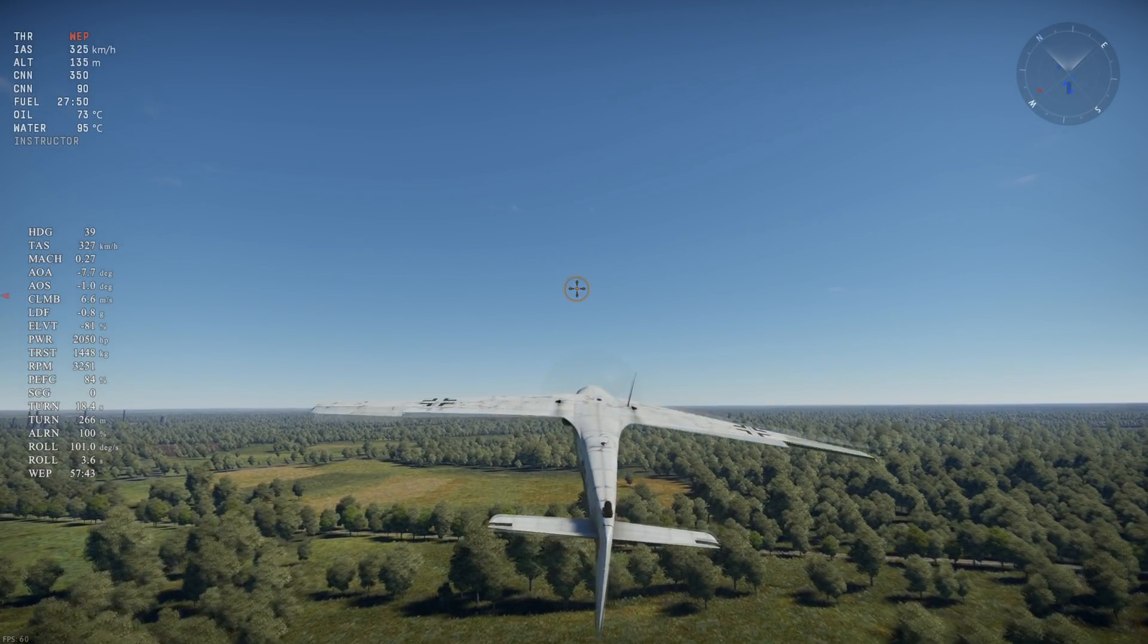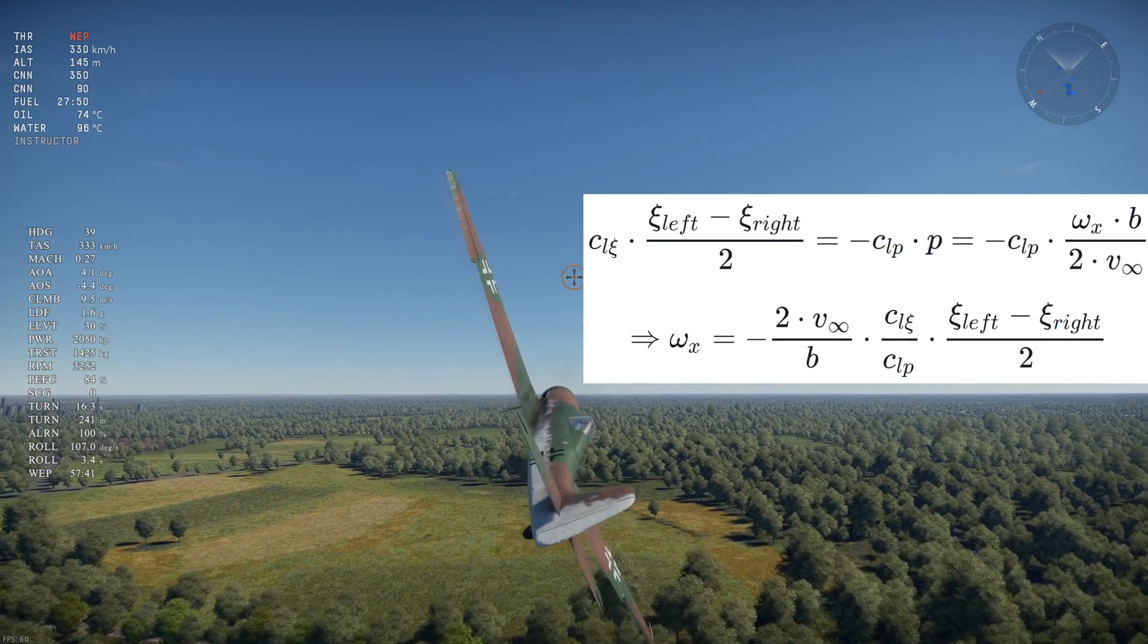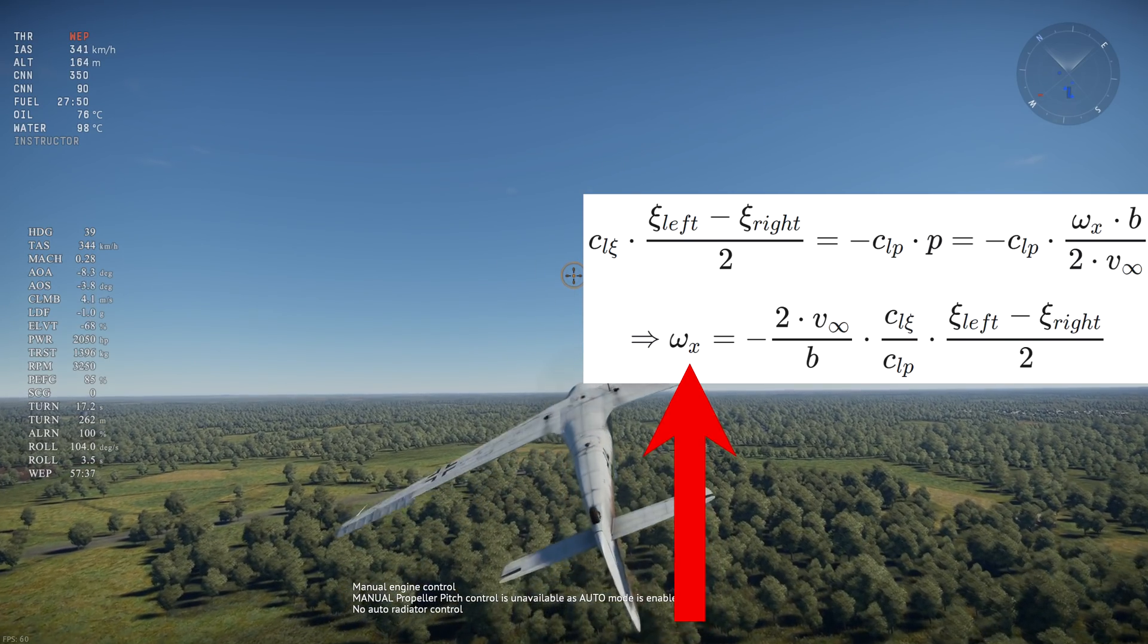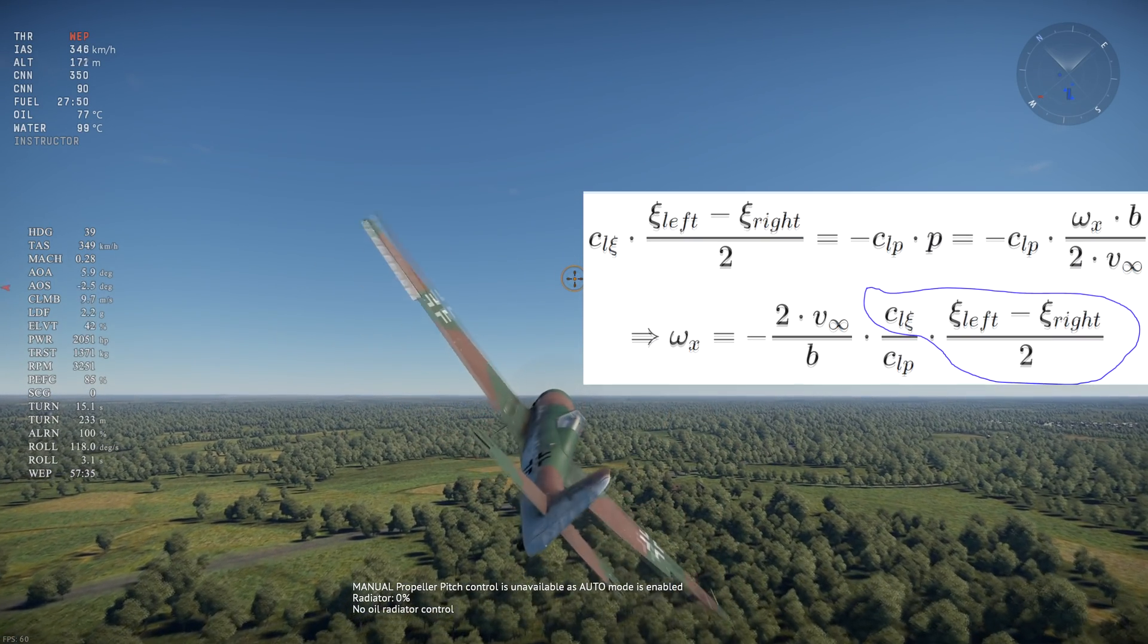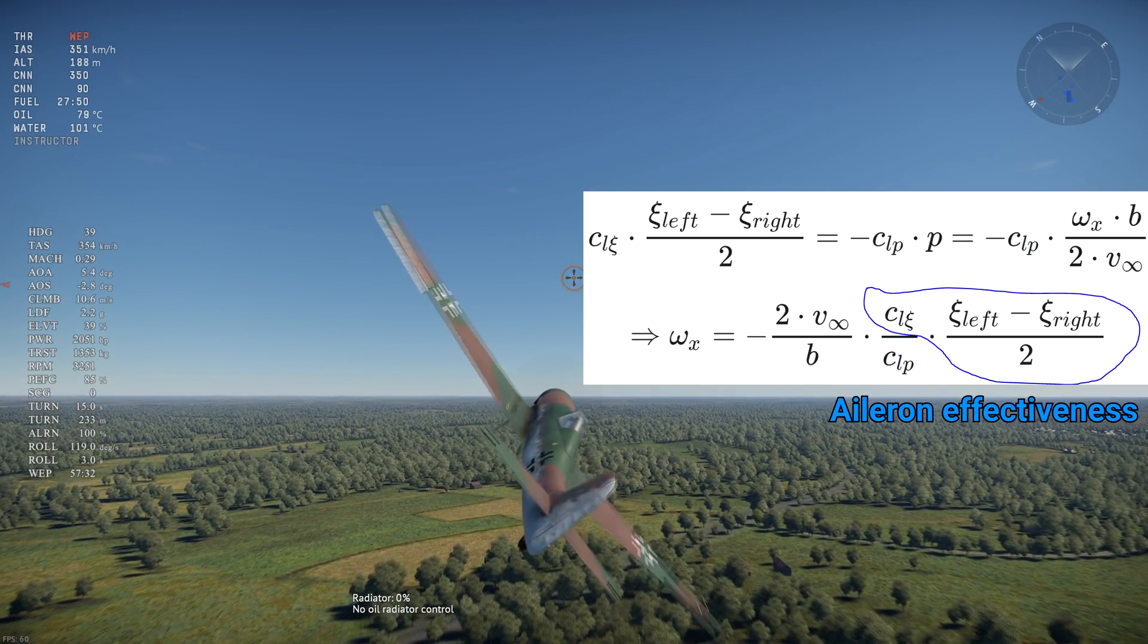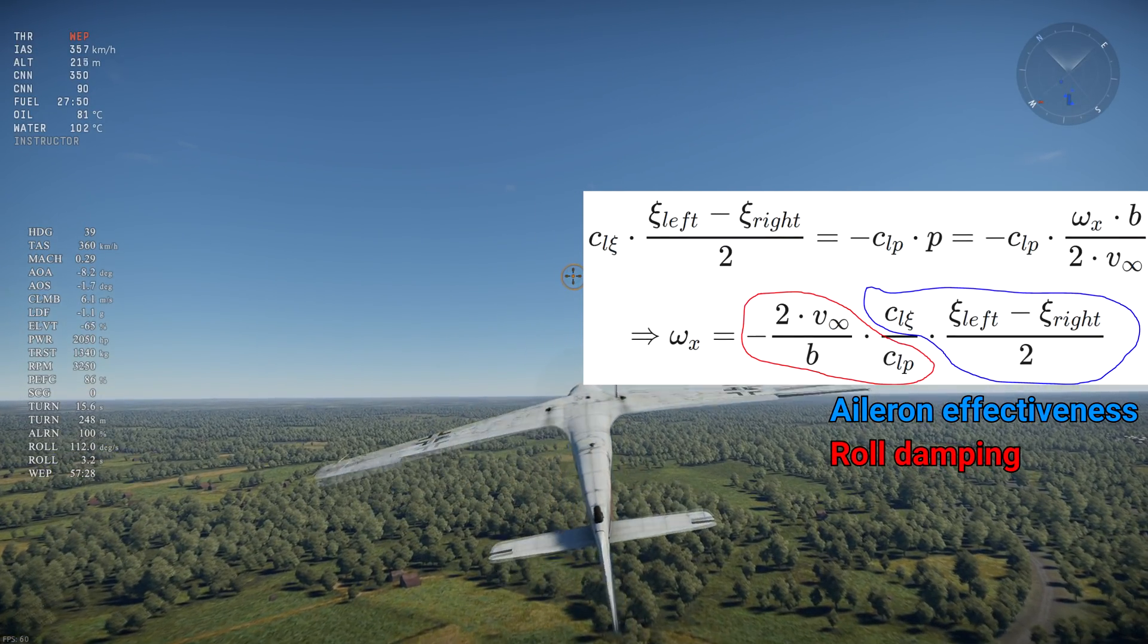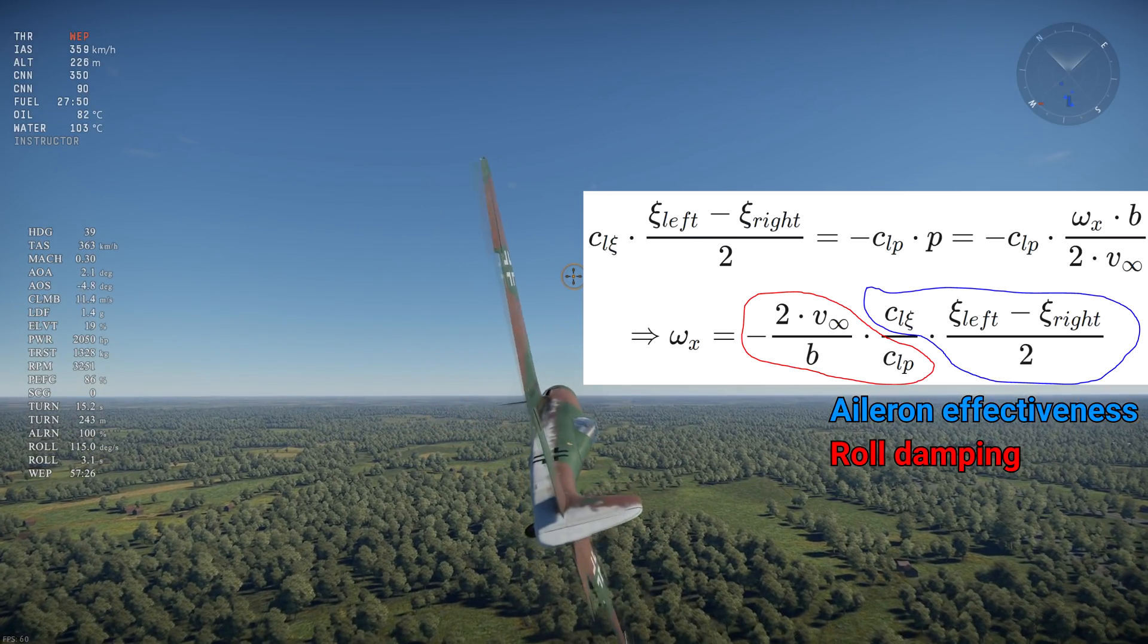Now we are ready to understand the broad aspects of the seemingly complicated roll rate equation. This is the sustained roll rate equation. Omega X is the sustained roll rate, the term circled in blue represents aileron effectiveness at generating roll torque, and the term circled in red represents roll damping, or the counteracting torque from the wings.